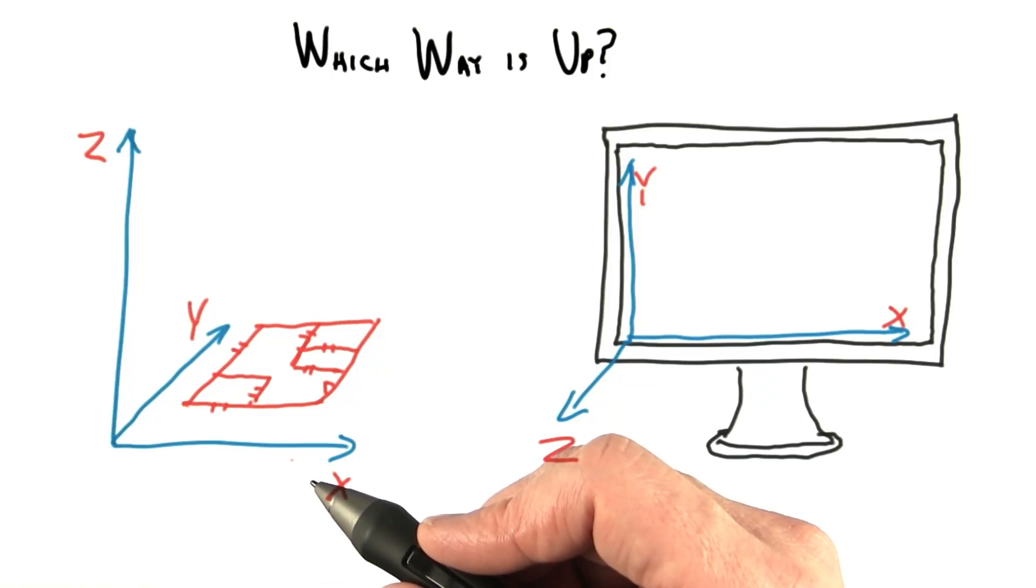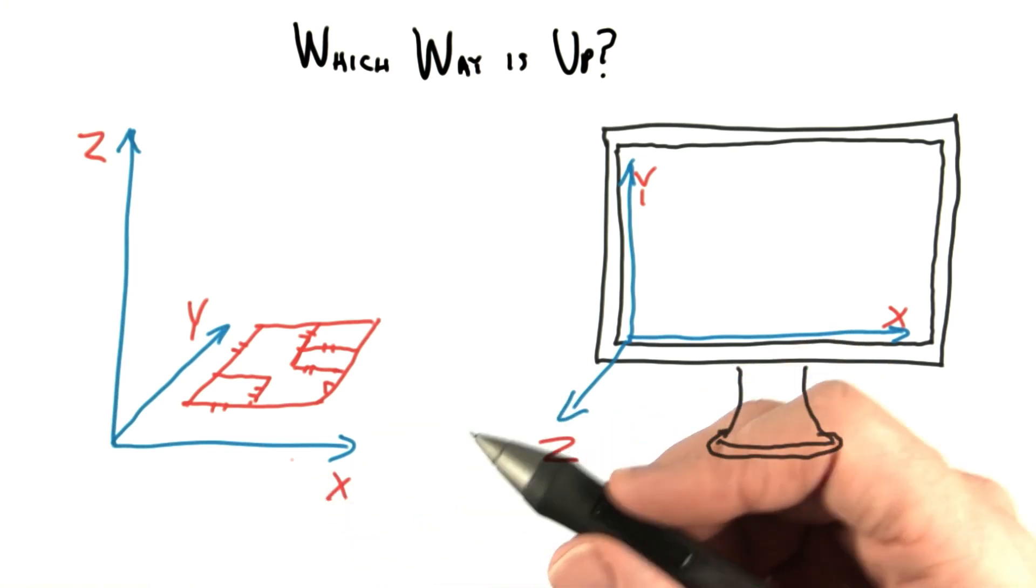There is no correct answer for which is better, a left-handed or a right-handed coordinate system. One or the other may be more convenient for people or intelligent rabbits, depending on the situation.